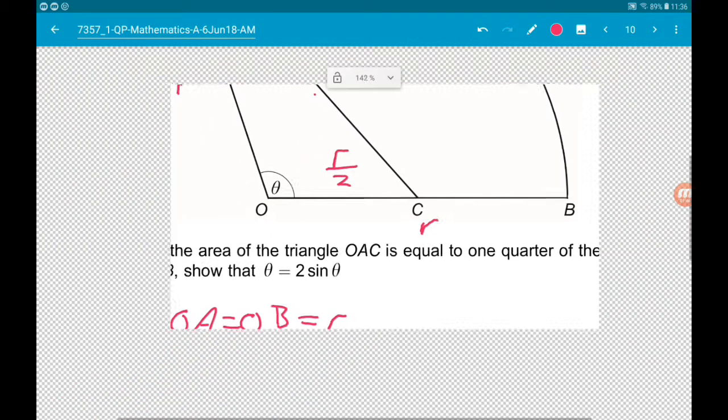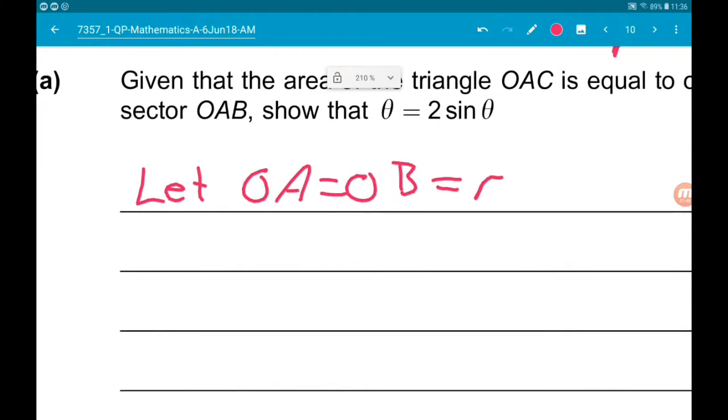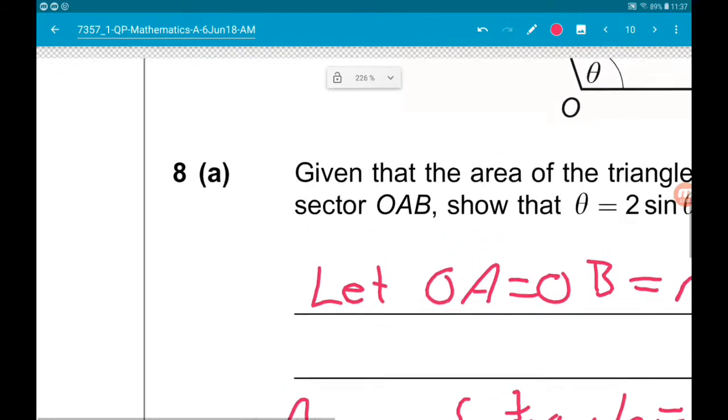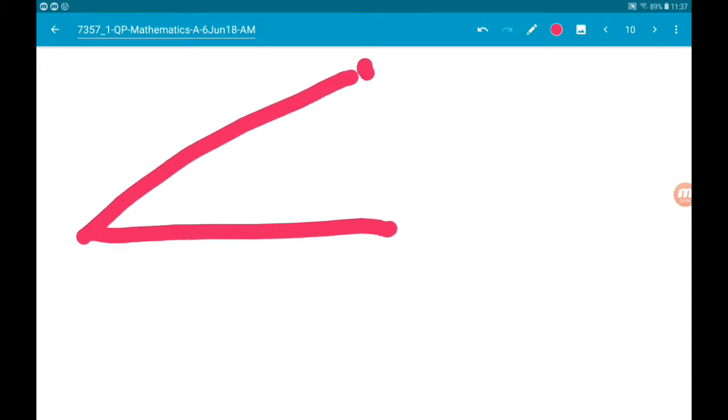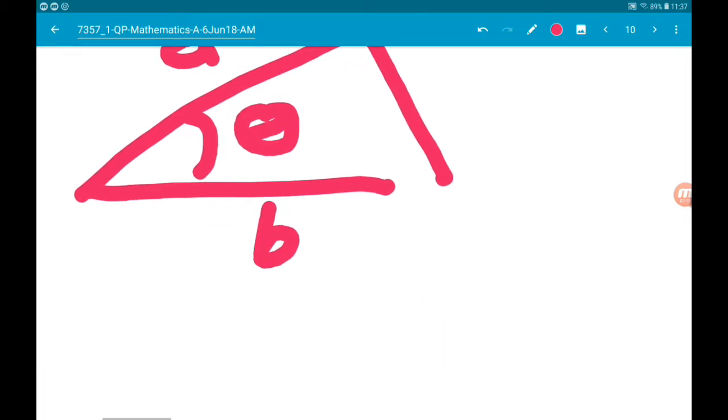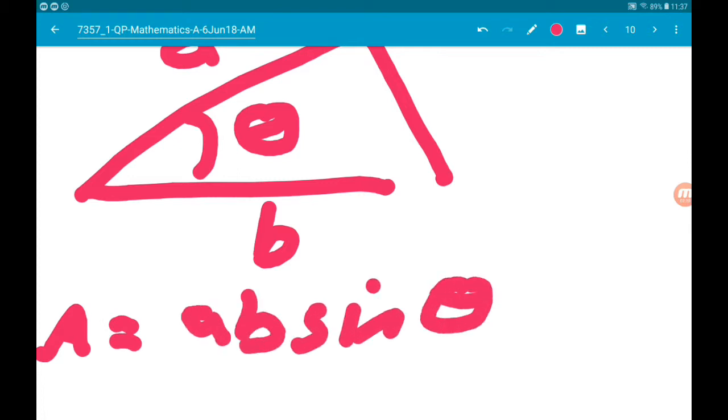Now, using trigonometry, the area of the triangle. Remember, area of a triangle with trig, where you know an angle and the two sides coming out, area is A, B, sin theta, all over two.